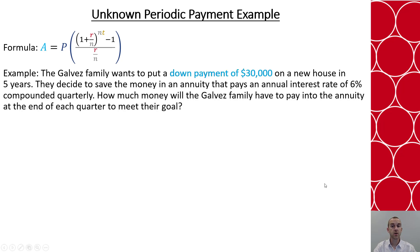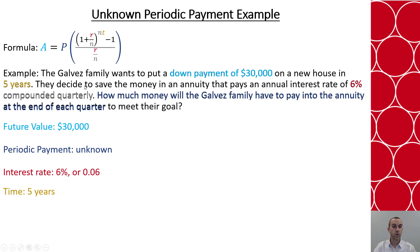So here we know the future value, which is $30,000. The question is how much is being paid at each quarter? That's our periodic payment that is unknown. The interest rate is stated as 6%, and it's stated this is over five years. And then we are compounding quarterly that interest, so that's every four times a year.